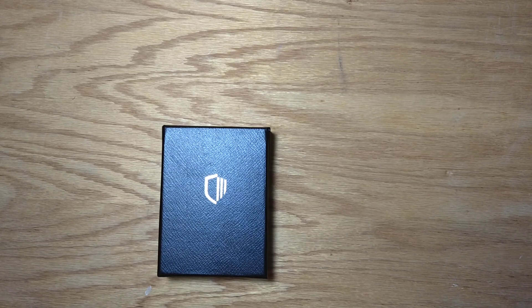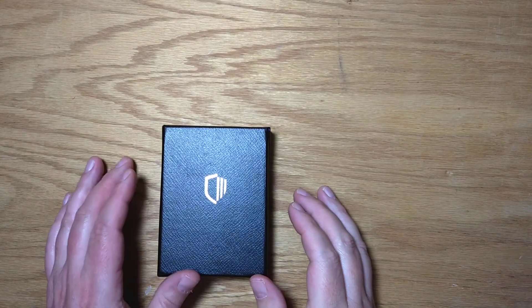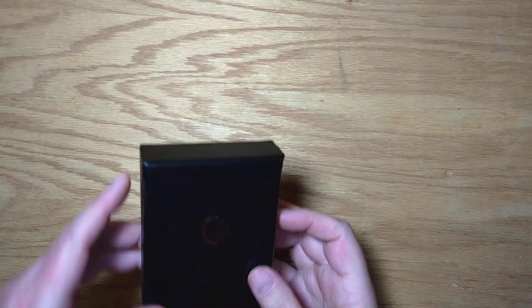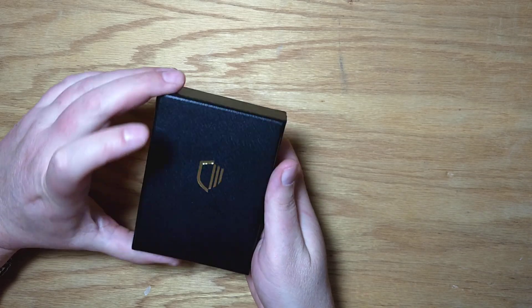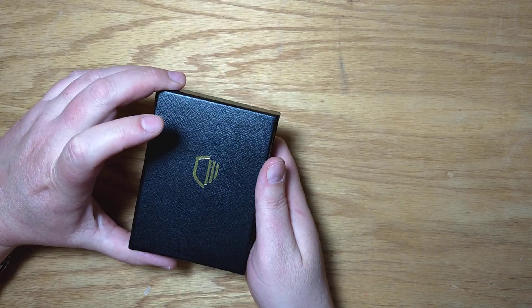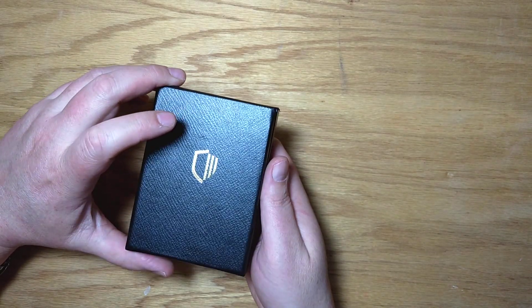Crypto Euclid here for an unboxing video of the CoolWallet S. This is a cryptocurrency hardware wallet. It's for cold storage of your Bitcoin and your cryptos.